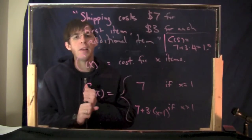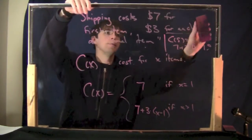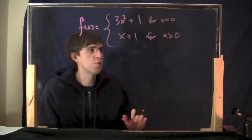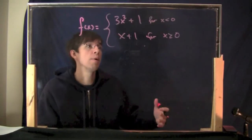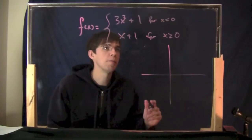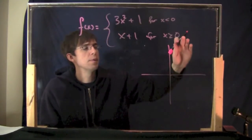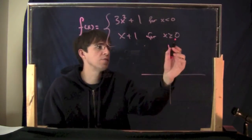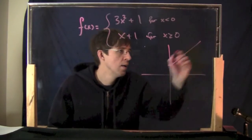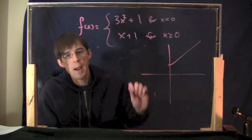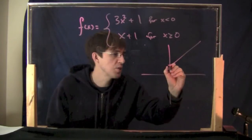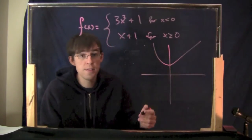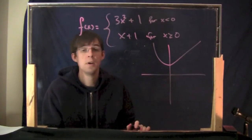Let's talk about how you can tell if a piecewise function is continuous or not. Here's a function I want to look at — is it continuous? When x is greater than or equal to 0, you get x plus 1, which is a line. When x is less than 0, you get 3x squared plus 1, which looks like a parabola with y-intercept at 1. When you look at the graph, you can tell right away: this one is continuous — the two pieces actually meet up at the same point with no break.